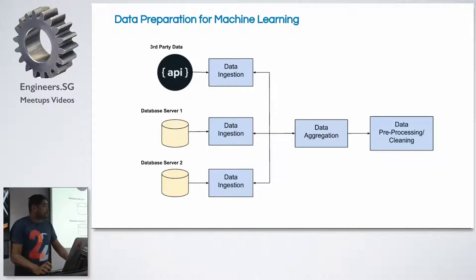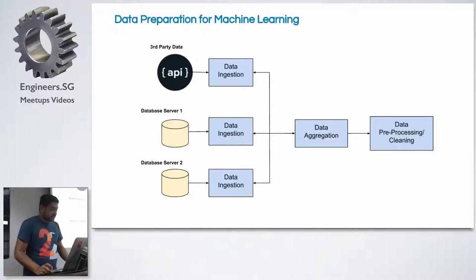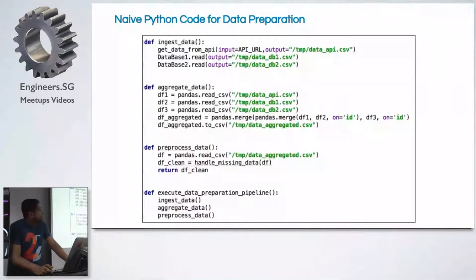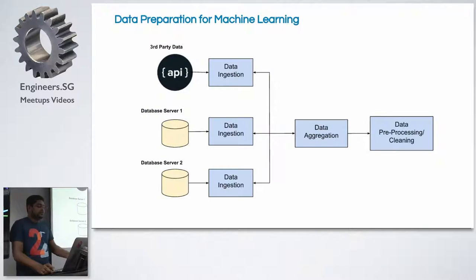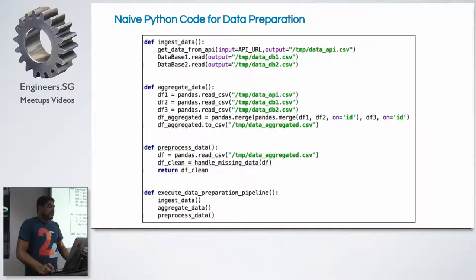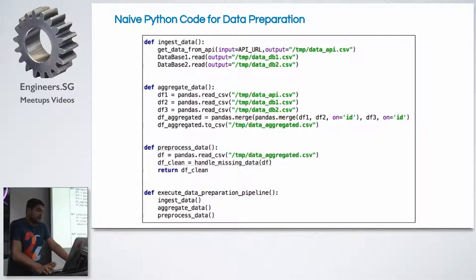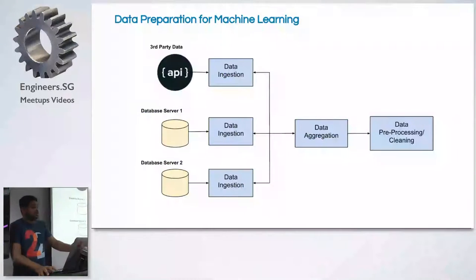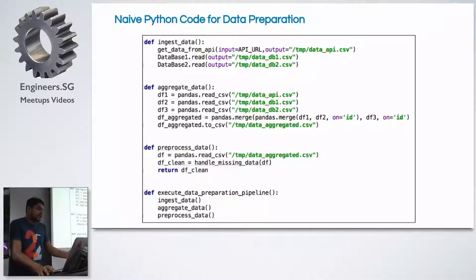Now I'll show an example of how we use scikit-learn in the whole flow. For a naive Python code implementation of this workflow, the ingestion part reads the data from the API and puts it as a CSV. We also have database one and database two, from which we read and store the data similarly.